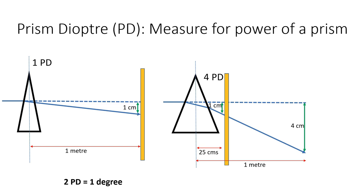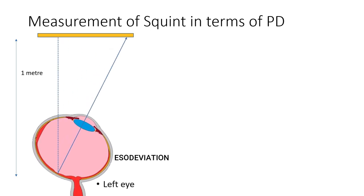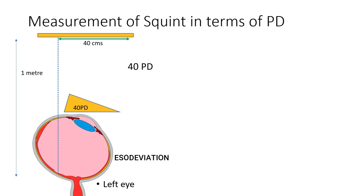With this understanding of prisms, we can now understand how squint is measured with prisms. Consider an eye that is iso-deviated by 40 cm on a screen at 1 meter — by the definition of prism diopter, this is 40 prism diopters of iso-deviation. To measure this, if we put a 40 prism diopter prism with apex towards the direction of squint in front of this eye, the deviation through the prism will allow the image to be focused back at the original point on the screen. This is the basis for measurement of squint with the prism bar cover test.